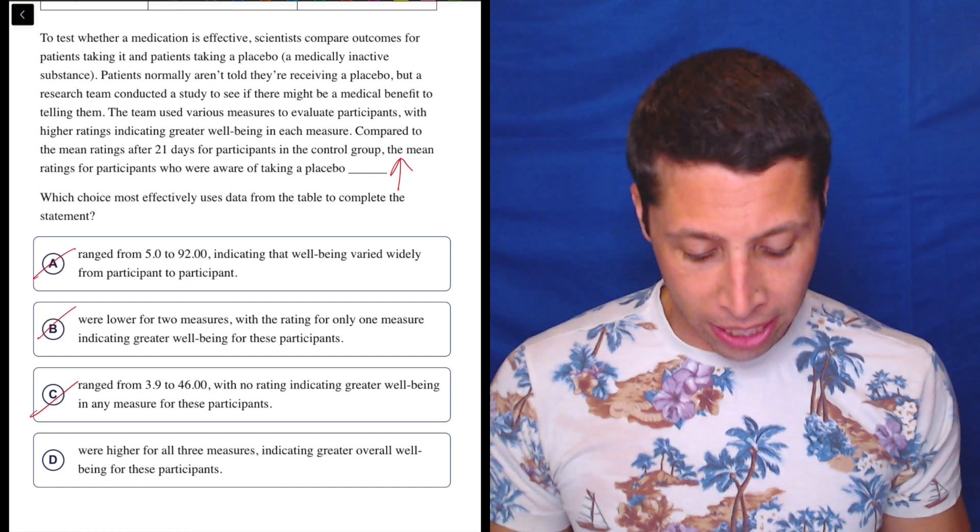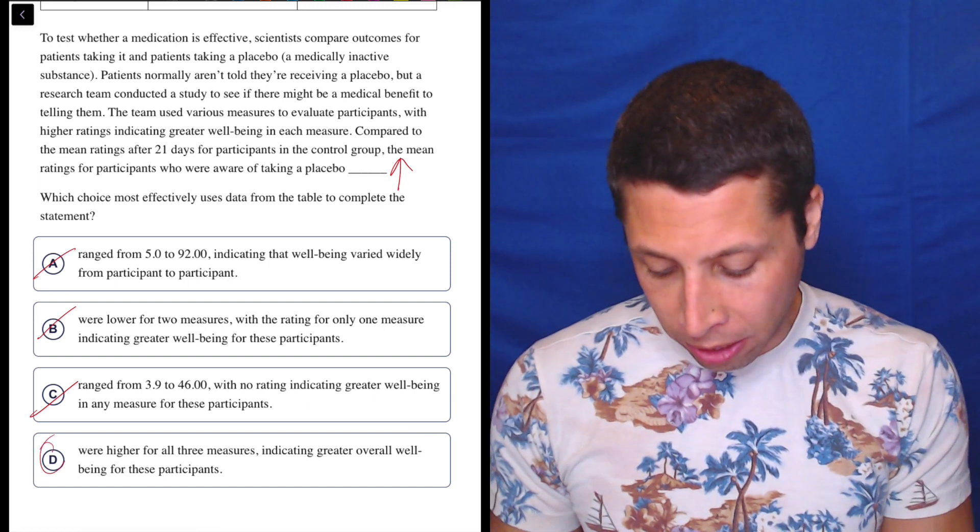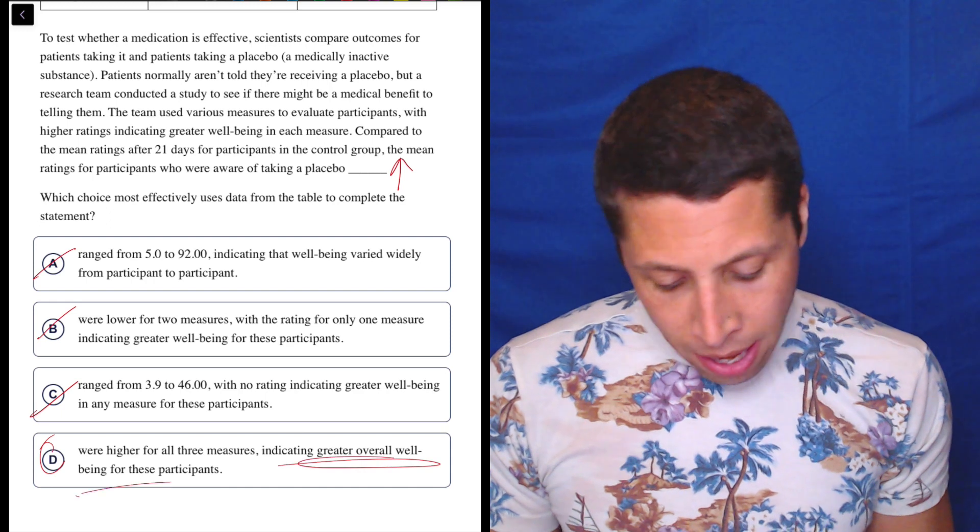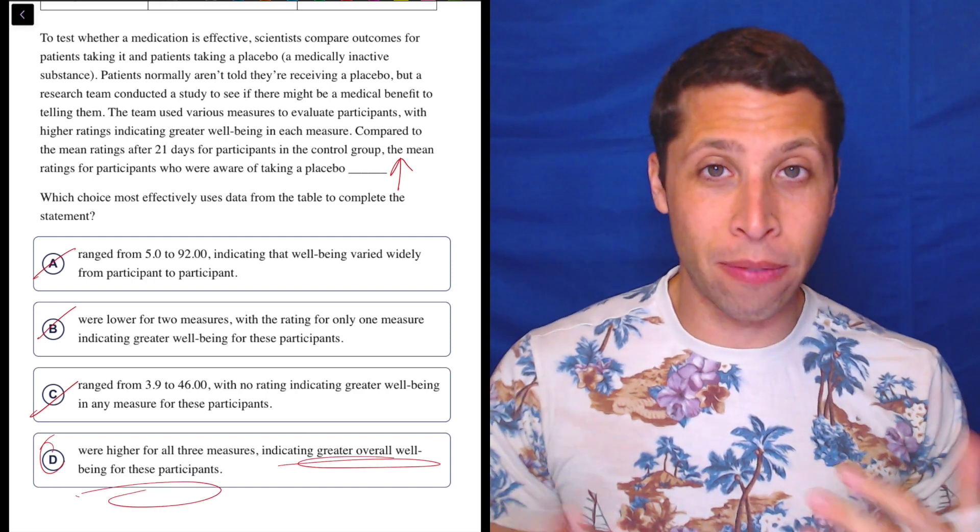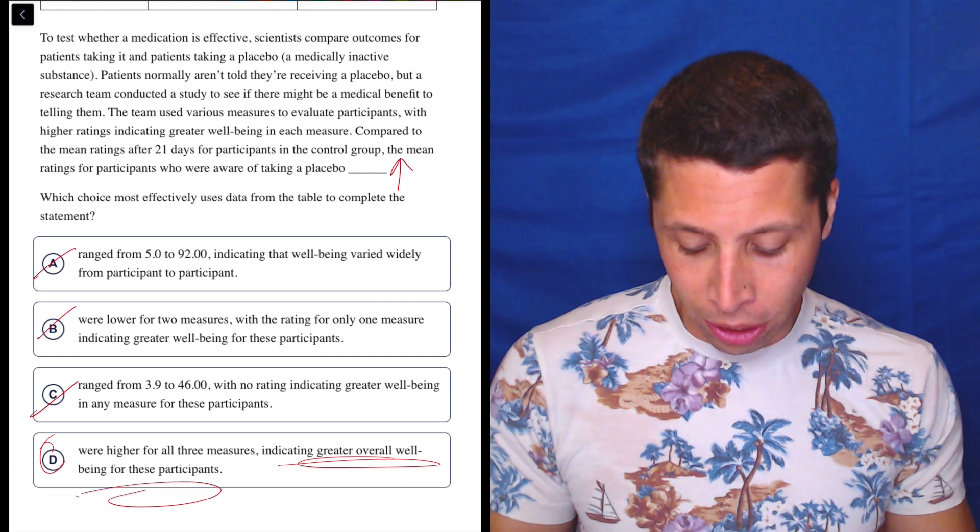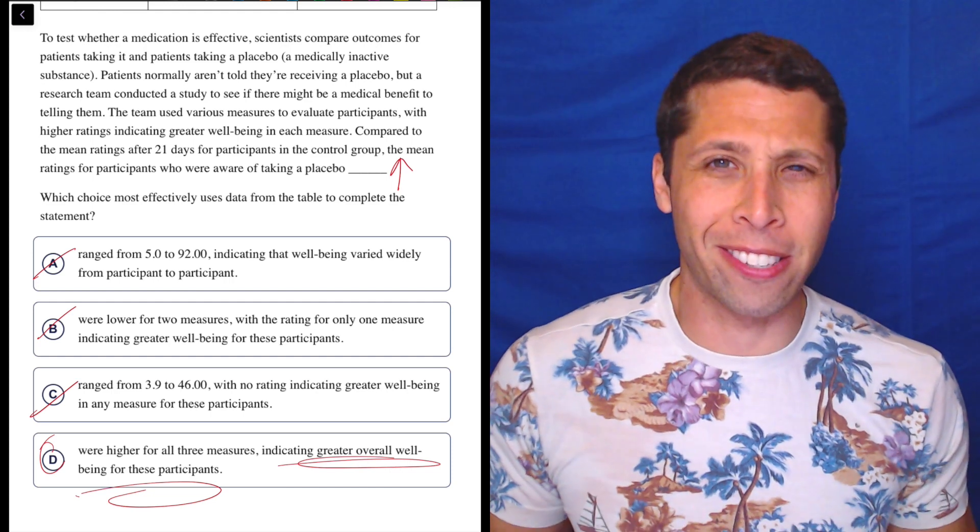And then D, we're higher for all three measures indicating greater overall well-being for these participants. So in a way, there is some sort of understanding of what we're reading that's involved here, but not really because only the beginning part of that choice is correct, right?